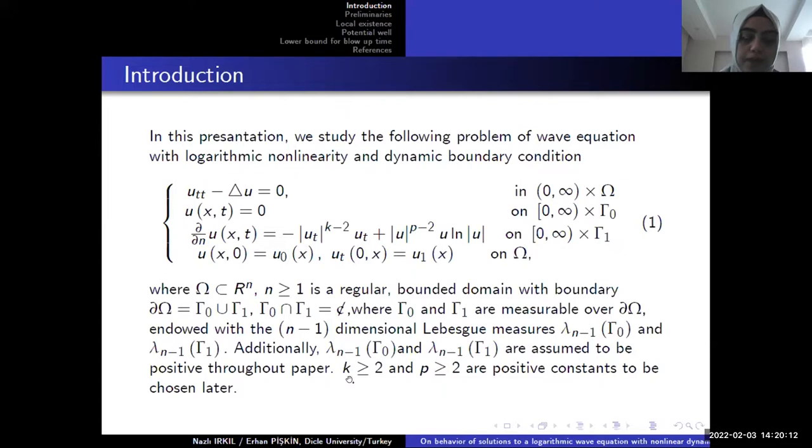And we must have some features for k and p. And you can see k and p is greater than or equal to 2. And these constants are positive. And we give some features again about these positive constants when we study the global existence or the blow-up results.